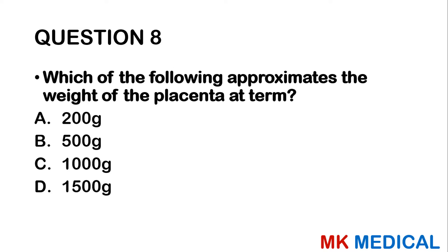Question 8: Which of the following approximates the weight of the placenta at term? A — 200 grams. B — 500 grams. C — 1000 grams. D — 1500 grams. The placenta gradually increases in size during pregnancy. 200 grams is very small; 1000 grams is quite large; 1500 grams would be massive. The answer is B — approximately 500 grams.